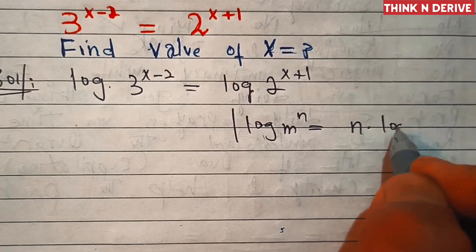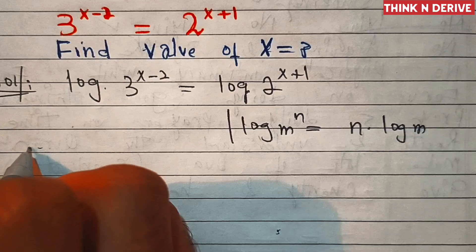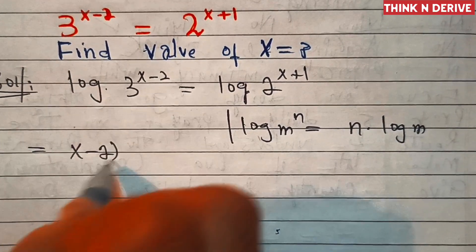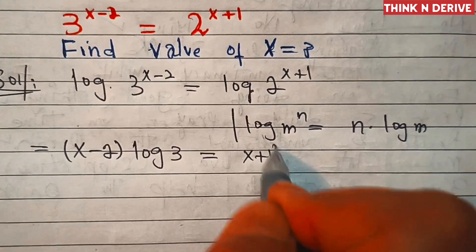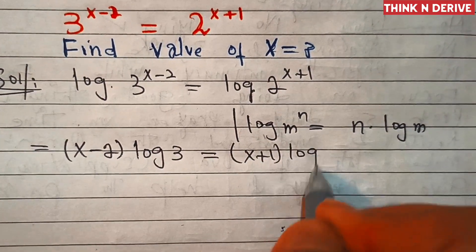So this is equal to x minus 2 log of 3 equal to x plus 1 log of 2.